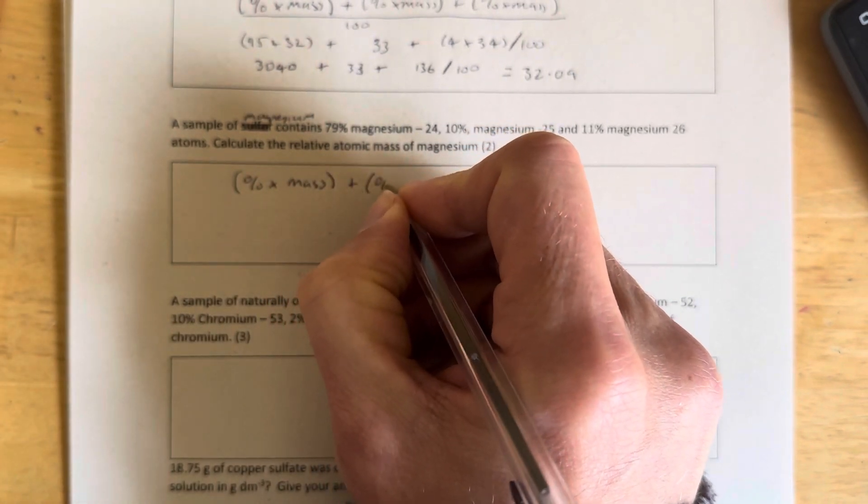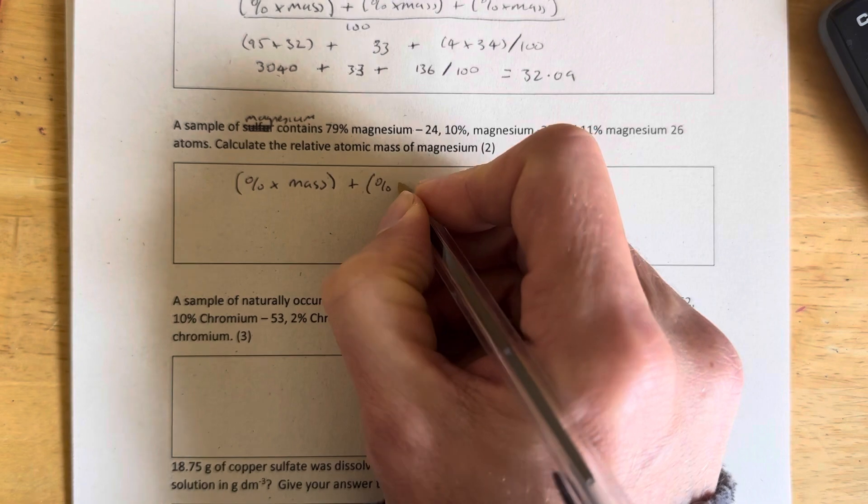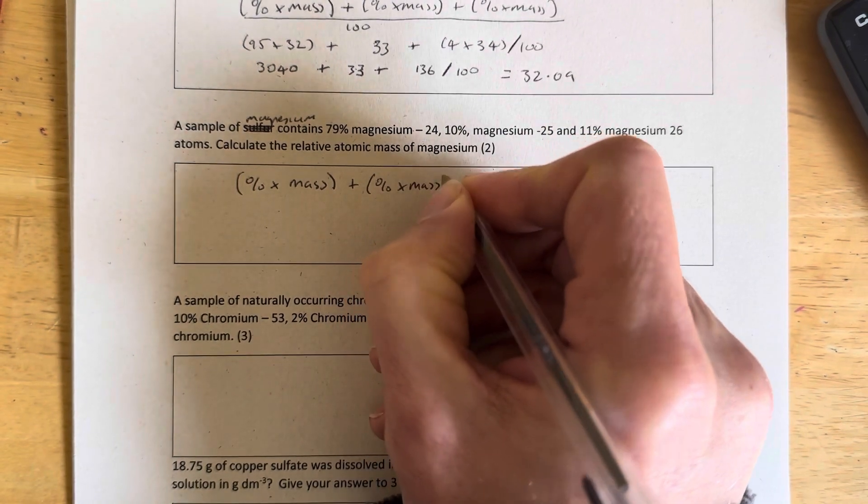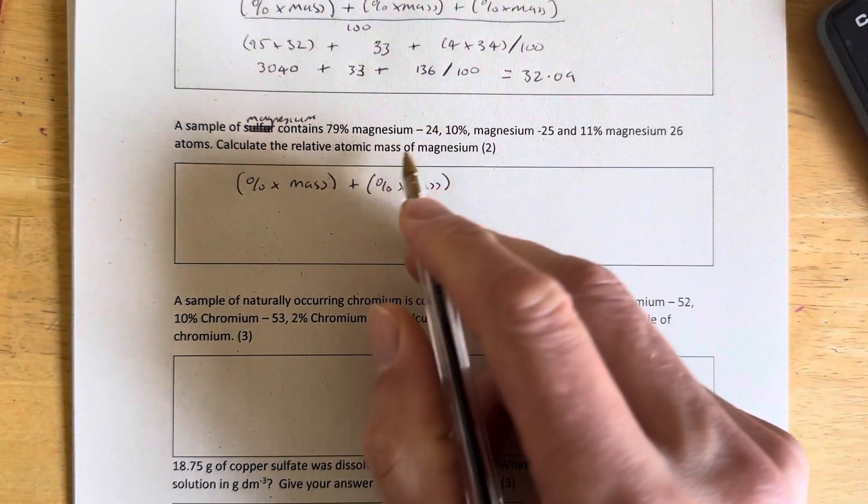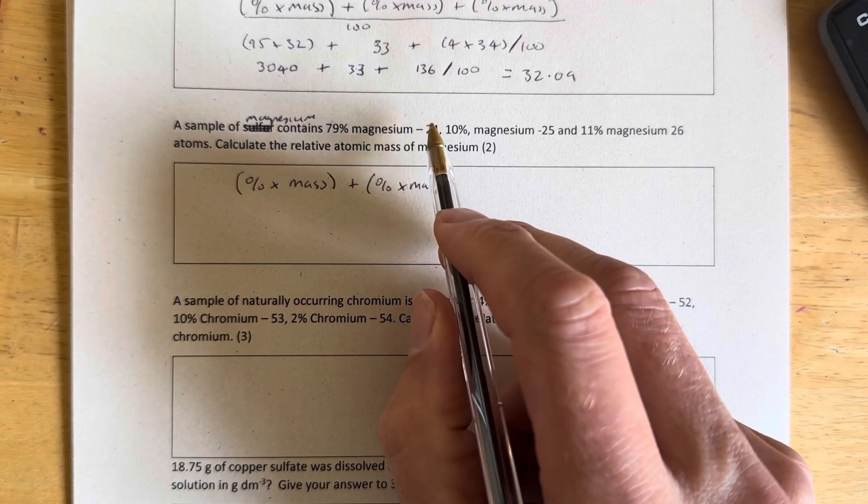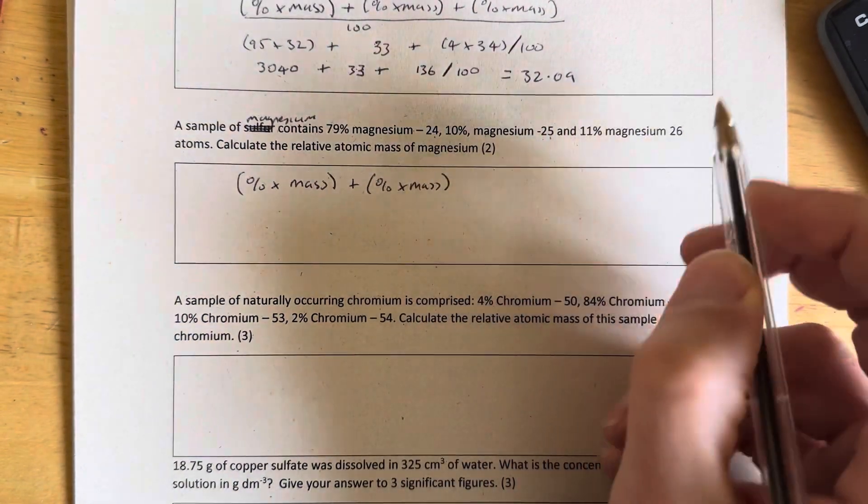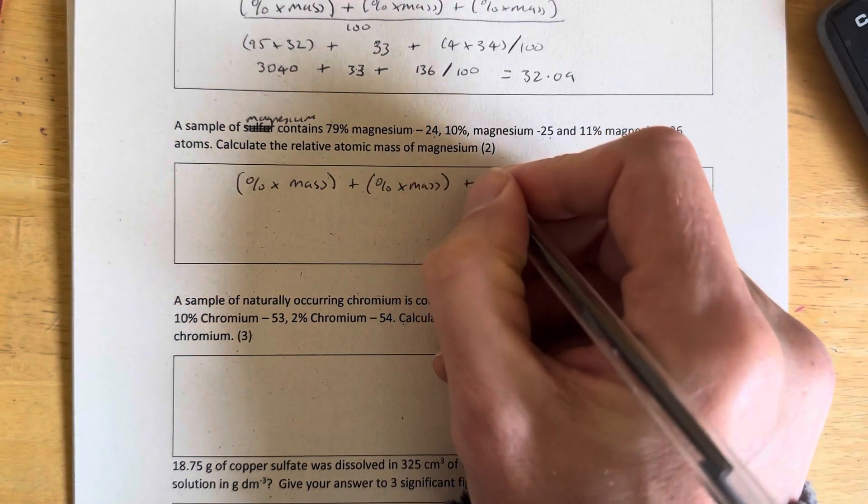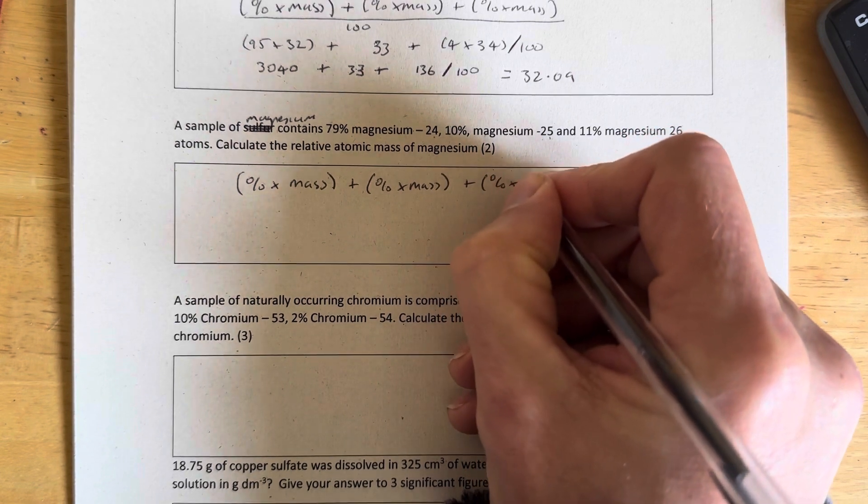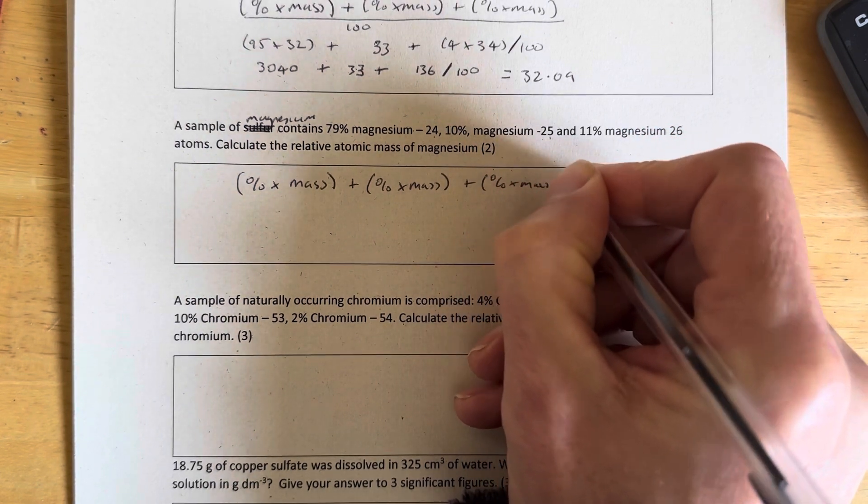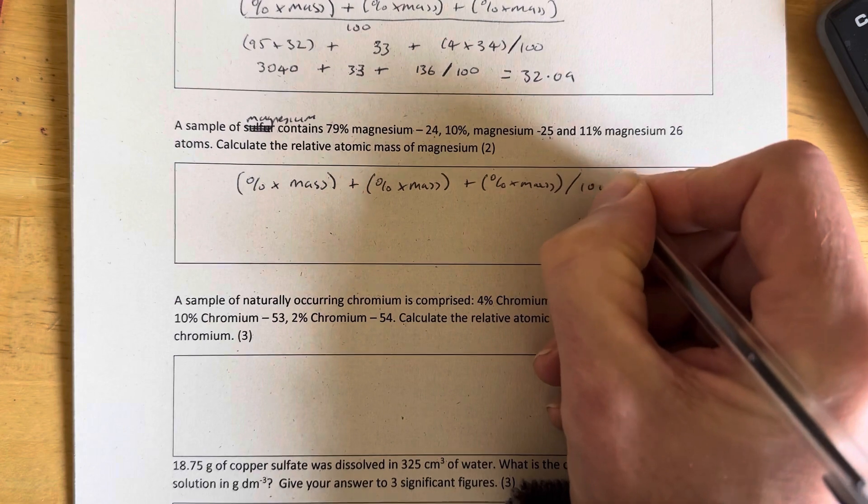Plus the percentage of the next isotope, the percentage abundance of the next isotope multiplied by the mass number. We need to do as many of these brackets as we have isotopes. So we've got three isotopes here: magnesium-24, magnesium-25, magnesium-26. We're going to need three brackets all added together, percentage times mass, and we're going to divide all that by 100.